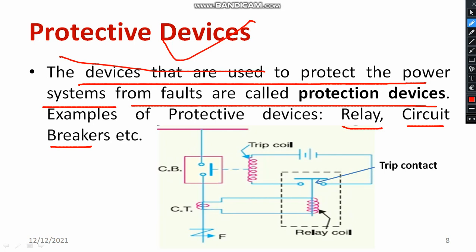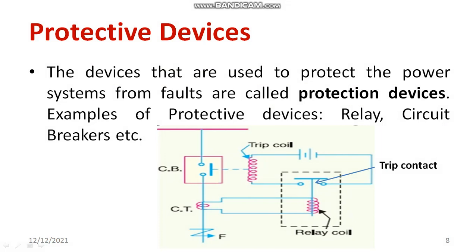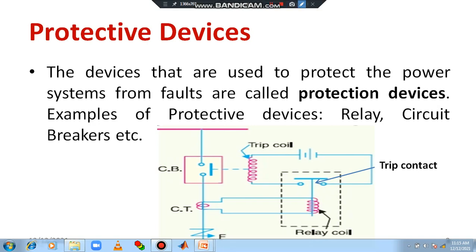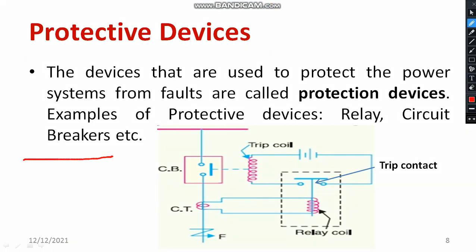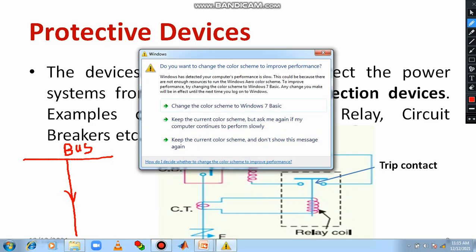Let me explain how a protective relay operates. A relay and a circuit breaker perform a combined operation. Consider a bus bar — a current-carrying conductor. A bus accomplishes the connection between two components; there are conductors running from one bus to another. Under normal conditions, current passes through this bus without any issue.